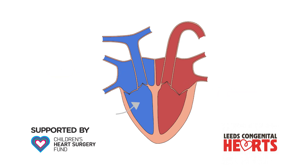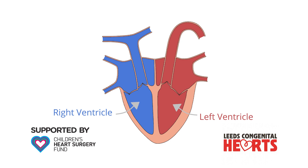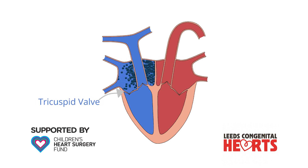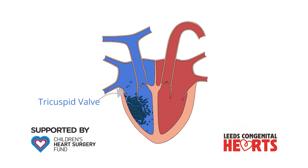And the ventricles, again one on the right and one on the left, pump blood out of the heart. Blood returning to the heart from the body has low levels of oxygen and has a bluish colour. It travels in veins and enters the right atrium. It then passes through a one-way valve, called the tricuspid valve, into the right ventricle.